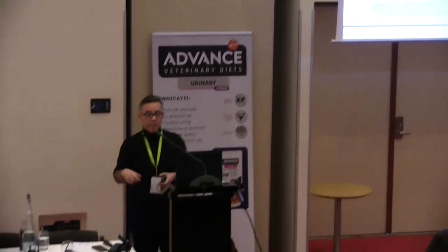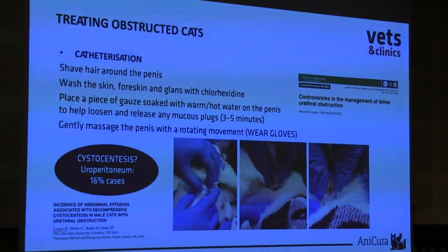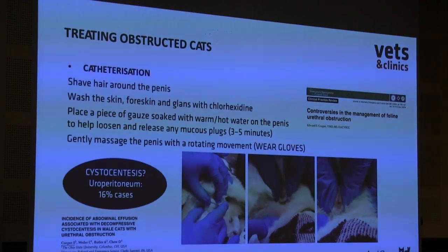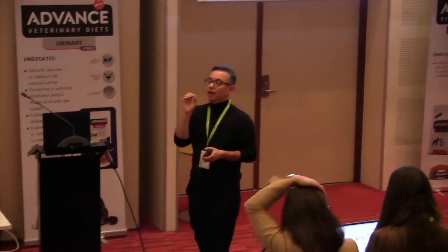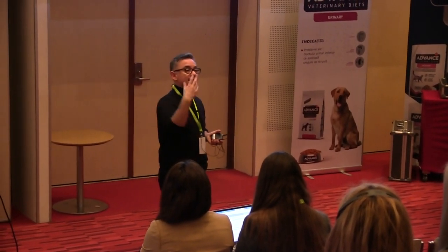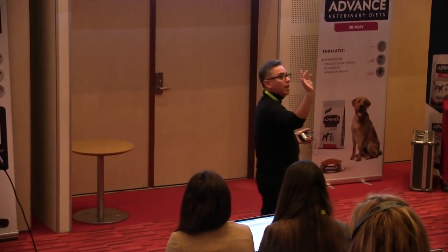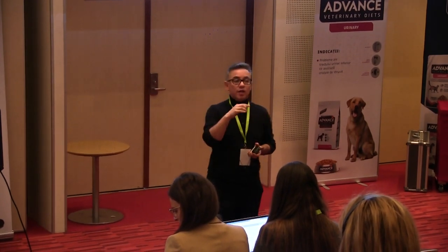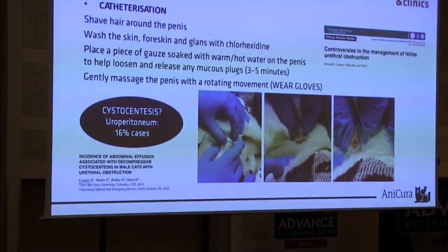For catheterization technique: some people shave the penis area — I shave the penis area. Wash the skin and glans with chlorhexidine, the same as used for surgery. I always place a socket of warm water over the penis to help liberate any plug inside the urethra. When you gently compress or massage the bladder, sometimes the cat starts to urinate. Make a rolling movement from the base of the penis to the tip, and sometimes you can see the plug starting to come out.